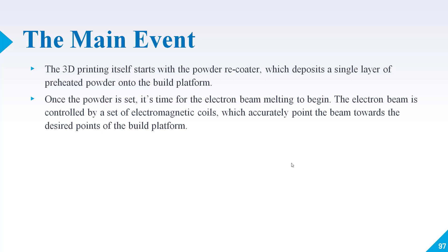The electron beam is controlled by a set of electromagnetic coils. Like in FDM type 3D printers, there are electromagnetic coils which instruct your laser where to go and where not to go. So electromagnetic coils basically control your electron beam to accurately point the beam towards the desired points of the build platform.